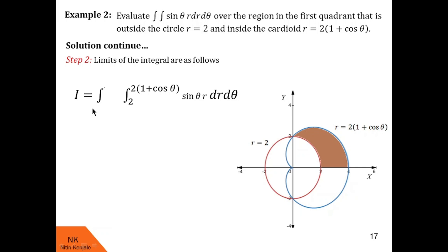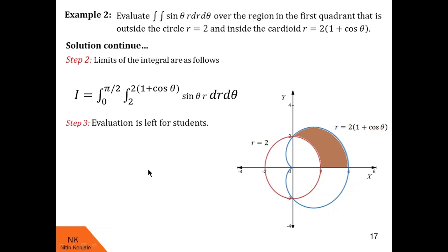For the theta limits, the region of integration touches the positive x-axis where θ = 0, giving the lower limit, and touches the positive y-axis where θ = π/2, giving the upper limit. So θ varies from 0 to π/2. This is the final answer of the integral — please cross-check and write in the comment box whether you were able to solve it.